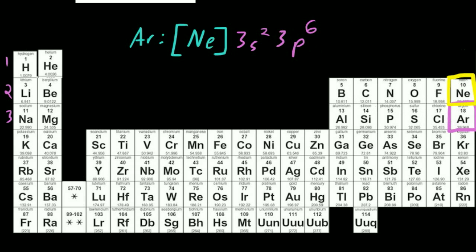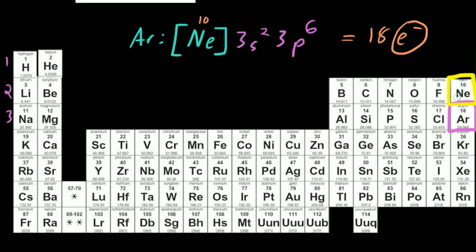If we needed to check how many electrons we had, we would say: how many electrons does neon have? Neon has 10 electrons. So we take 10, add 2, that gives us 12, and add 6, that gives us 18 electrons. And that's exactly how many we want in argon.